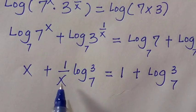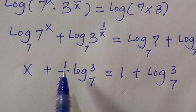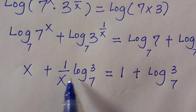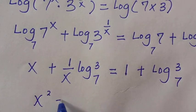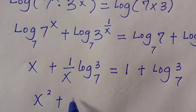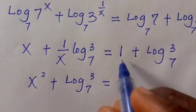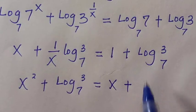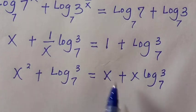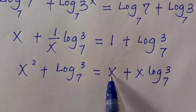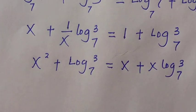Here we have 1 over x which is a fraction. Let's multiply the whole equation by x to eliminate the fraction. So x times x gives x squared, plus when x multiplies the fractional term we are left with log 3 base 7 only. On the right side, x times 1 gives x, and x times log 3 base 7 gives x log 3 base 7, and factoring out x gives x times the quantity 1 plus log 3 base 7.